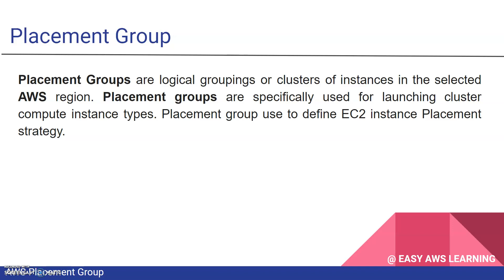When you launch a new EC2 instance, the EC2 service attempts to place the instance in such a way that all of your instances are spread out across the underlying hardware, to minimize failure. You can use placement groups to influence the placement of independent instances to meet your requirements — for example, where you need high bandwidth or want to deploy your EC2 instances in the same hardware or the same partition.